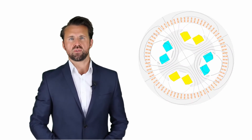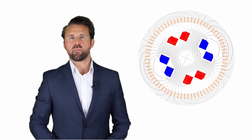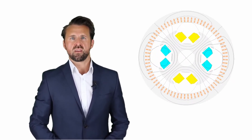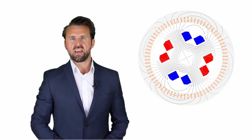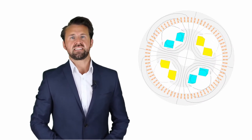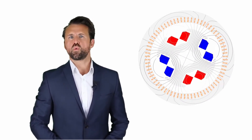Instead of magnets, externally excited Synchronous Motors have coils in the rotor which generate a magnetic field depending on the current flowing in the coils. The main disadvantage of externally excited Synchronous Motors are the slip rings which transmit the current to the rotating rotor. One of the biggest advantages of EESM is that the strength of the magnetic field of the rotor can be adjusted, and therefore no current is needed to weaken the magnets.